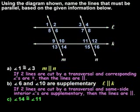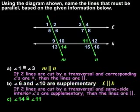In part C, we're given that angle 14 is congruent to angle 11 and we're asked to name the lines that must be parallel based on this information. Notice that angles 14 and 11 are formed by lines M and N and the transversal K. And notice that they are alternate interior angles because they are on the interior of lines M and N and on alternate sides of the transversal K.